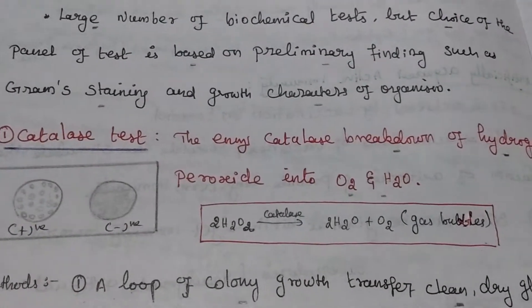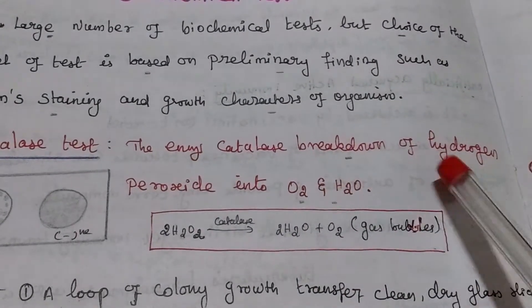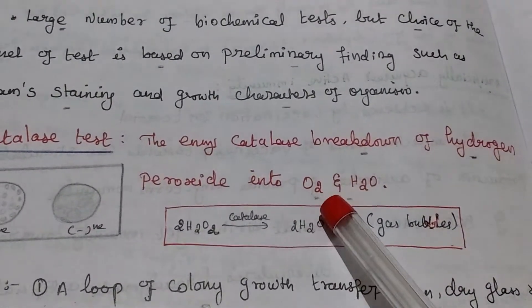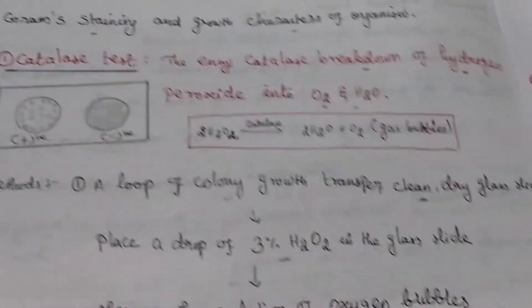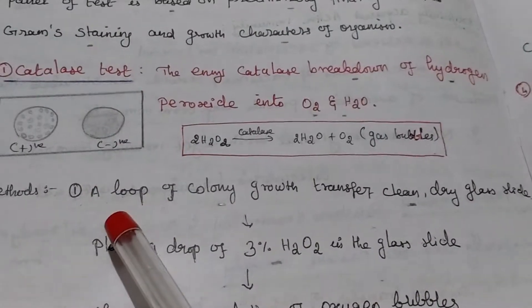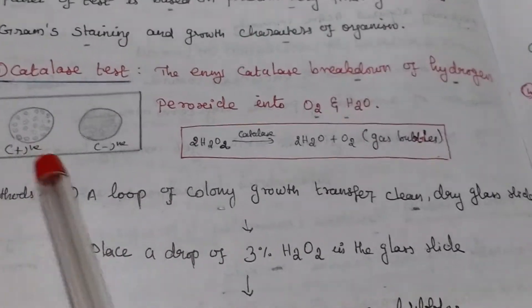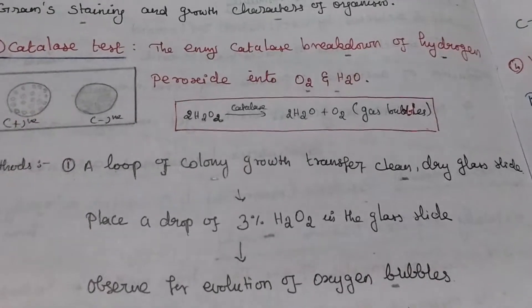First one is catalase test. This enzyme catalyze breakdown of hydrogen peroxide into oxygen and water. First we are taking one clean glass slide, add yellow filler bacterial culture, then we are adding 3% hydrogen peroxide.